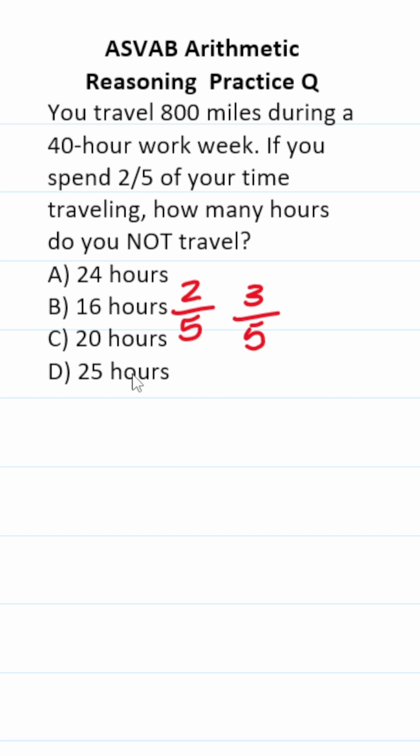If you couldn't do that mentally like I just did, you would do 5 over 5 minus 2 over 5 to get you 3 over 5. Now we have to figure out what three-fifths of a 40-hour work week is.